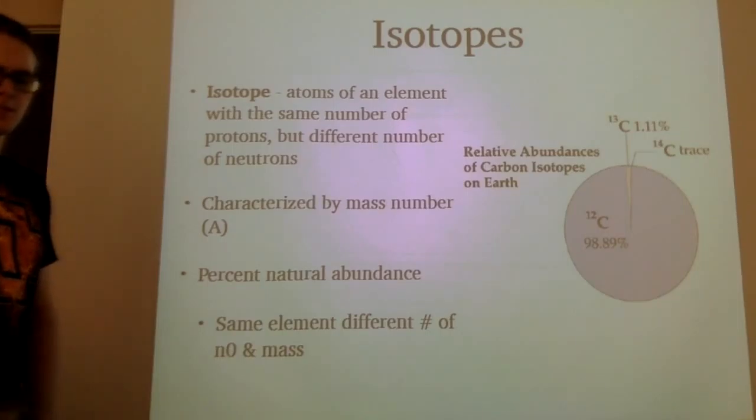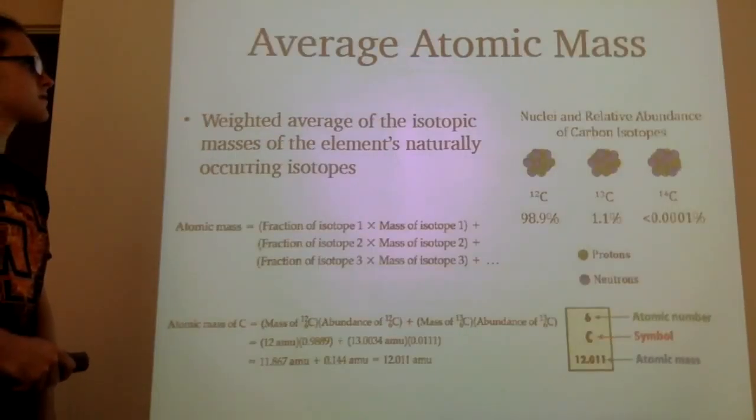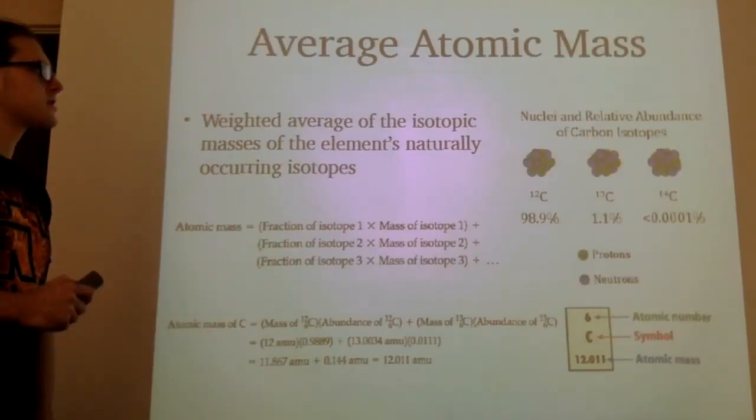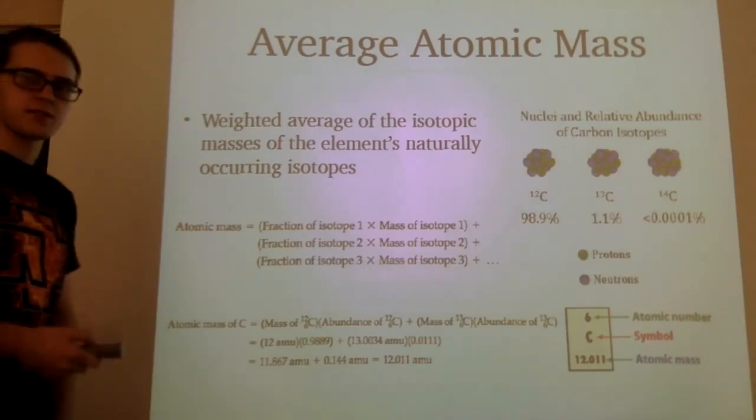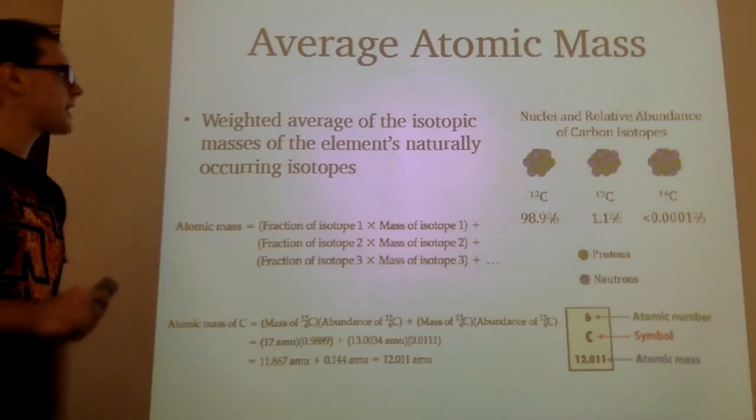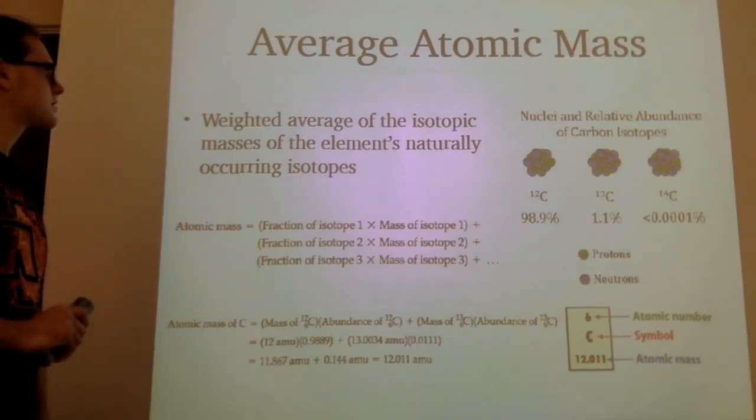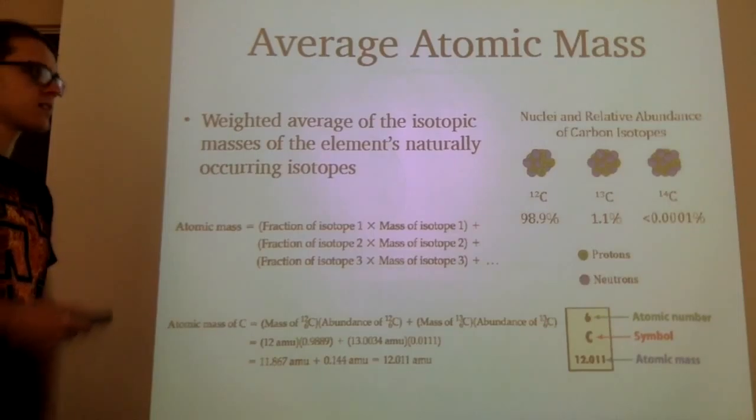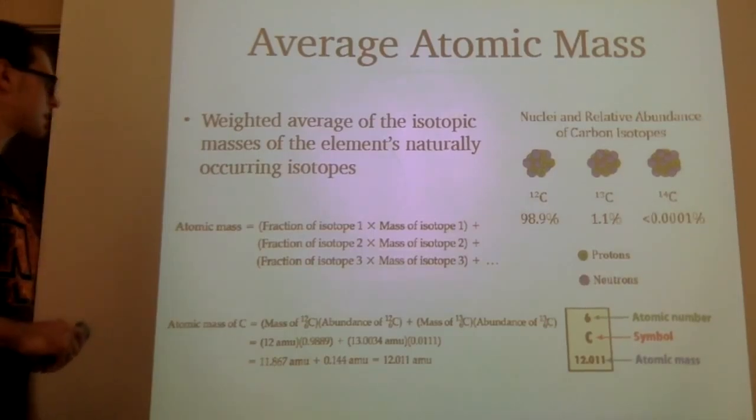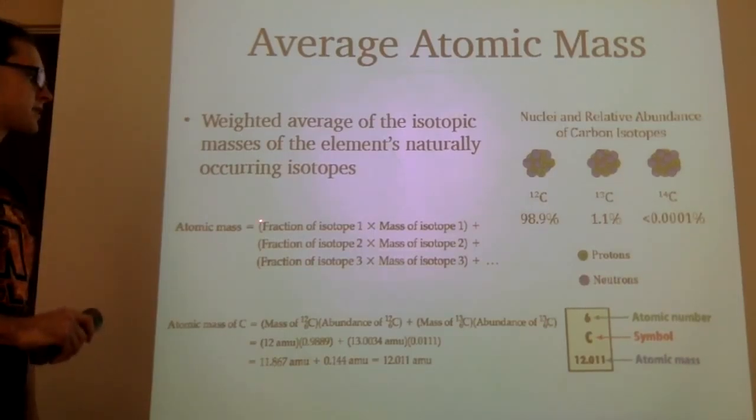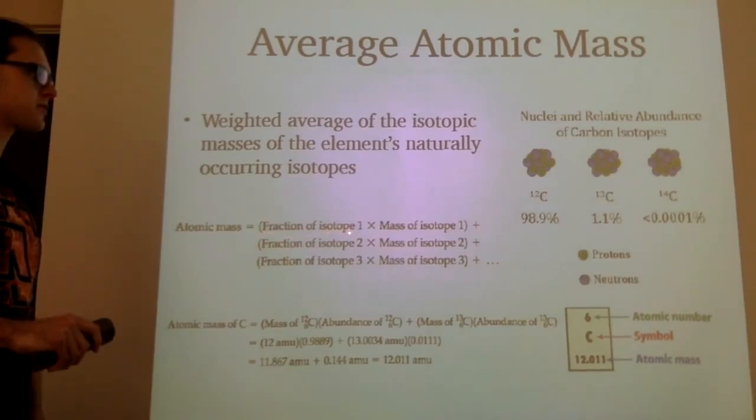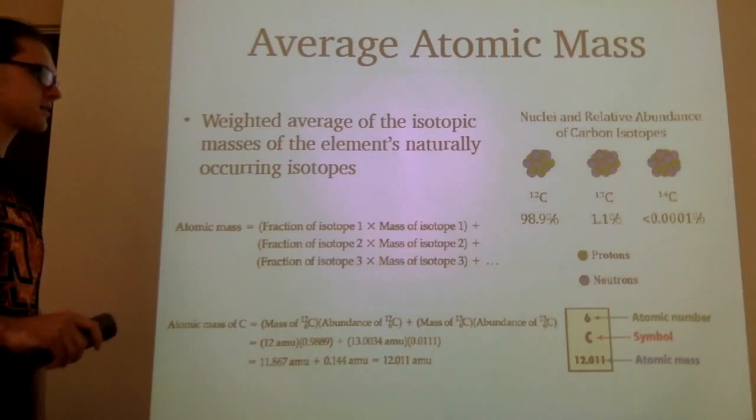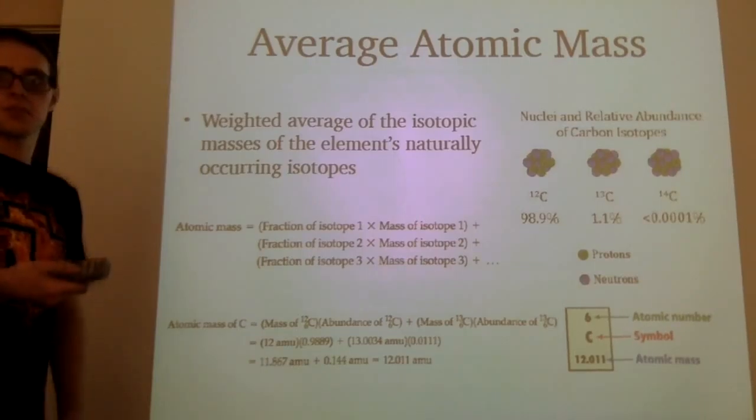Let's take that and move forward. To calculate the mass of each element, we use the average atomic mass, which is the weighted average of the isotopic masses. For the atomic mass, we take the fraction of each isotope, multiply that by its respectful mass, and that's how much each element weighs.